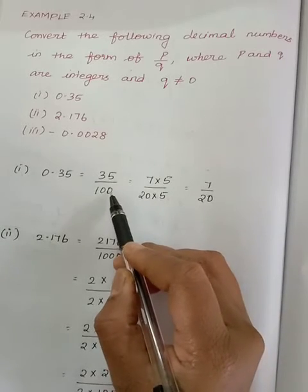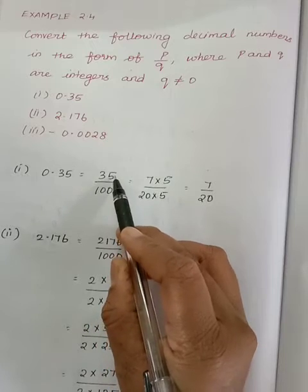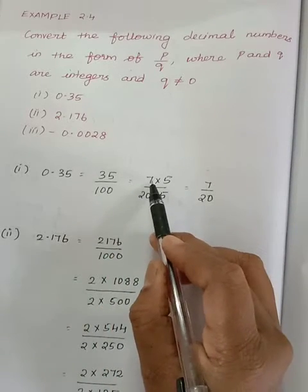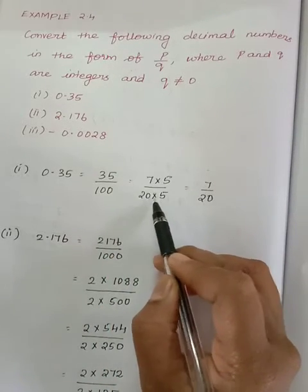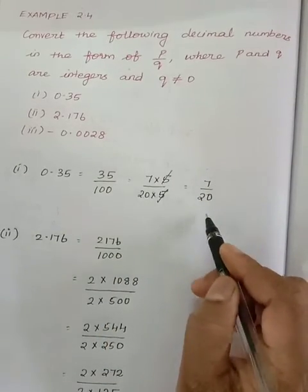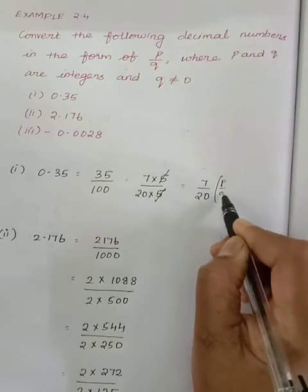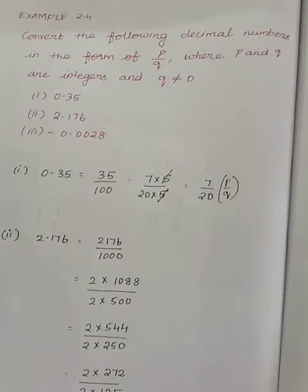We have to place the decimal point before two numbers since it is divided by 100. This 35 divided by 100 can be written as 7 times 5 is 35, 2 times 5 is 100. So 5 and 5 get cancelled, 7 by 20. So now we have written this in P by Q form where the Q value is not equal to 0.